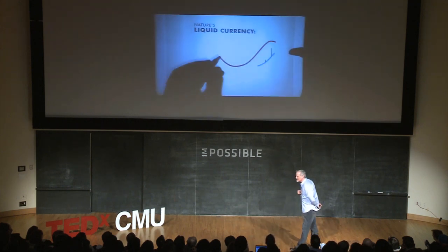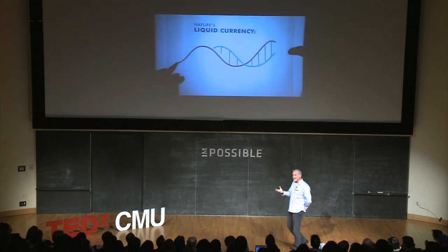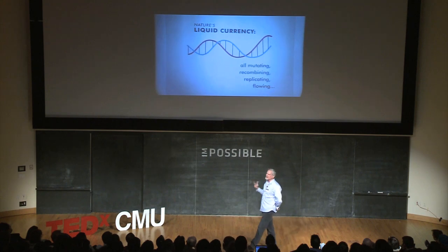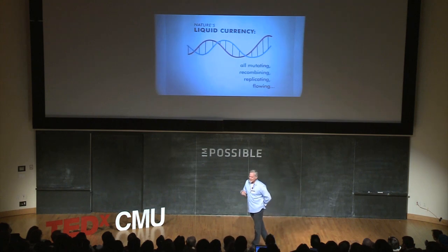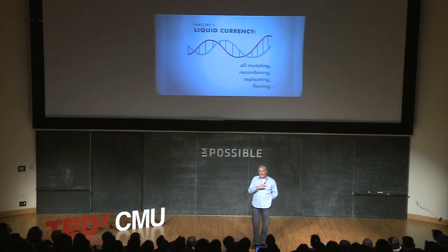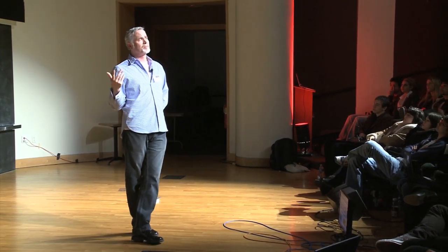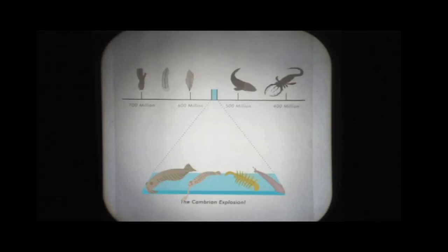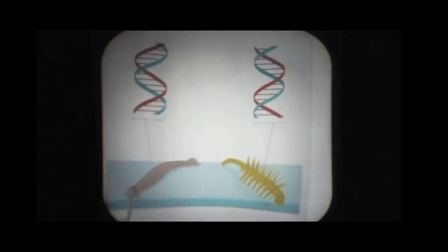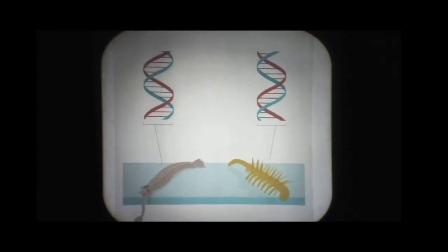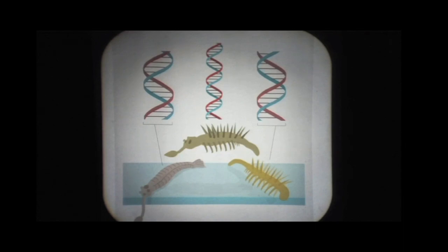Nature's liquid currency — DNA — is flowing, replicating, recombining, and mutating together. That really led to some pretty interesting explosions. Think about the Cambrian explosion: suddenly two different organisms could get together, recombine some genes, and create a third thing. We had this huge explosion in creativity.